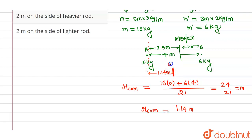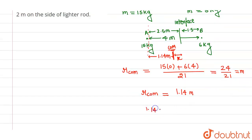So from the interface, distance from interface is suppose x. So 1.14 plus x is nothing but 2.5. So x will come out to be 2.5 minus 1.14, that is nothing but 1.36m.